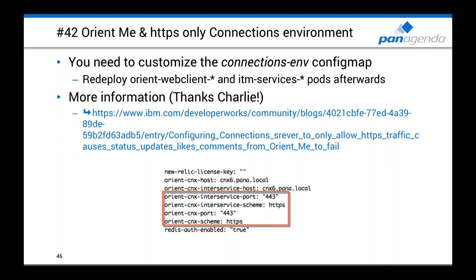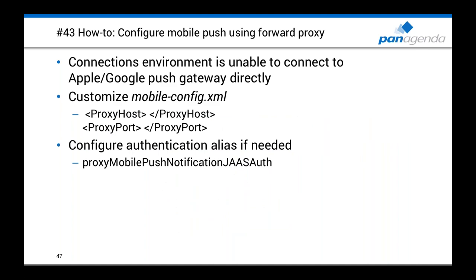Tip 43: Mobile push notifications with proxy configuration. If you want iOS/Android mobile push notifications, your Connections environment needs internet access to reach the Apple Gateway or Google Gateway. If direct internet access is unavailable, you can configure a proxy — specify your proxy host, proxy port, and proxy authentication credentials. Restart your environment and Connections will be able to reach the push gateways. This was included in Connections 5.5.